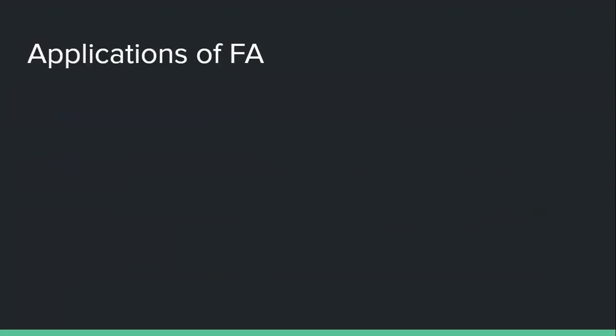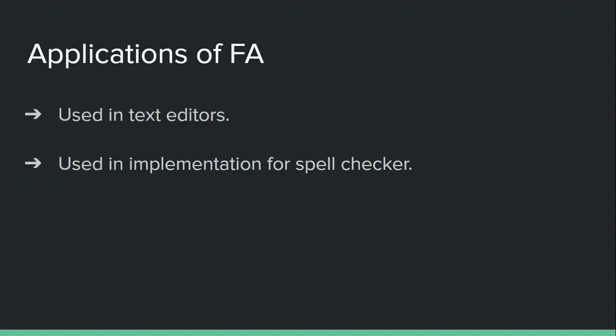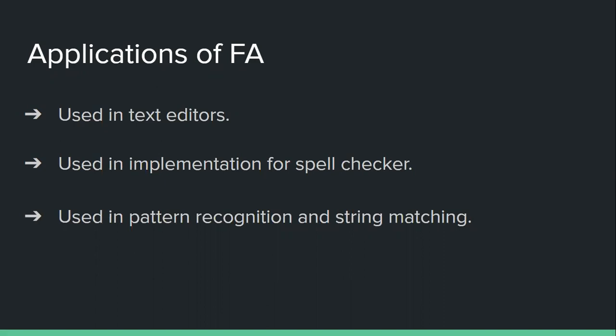Now let's see the applications of FA — where we can use it. It is commonly used in text editors, and in implementation of spell checkers. If you've observed in Microsoft Office, when we write a wrong spelling it marks an underline below that wrong word — such spell checking is possible with FA. It can also be used in pattern matching and string matching. We use email IDs, which have a specific pattern: username @ domain name. If you skip the '@' it will not accept your email as a valid address — this kind of pattern recognition is possible with FA.